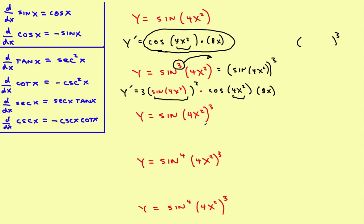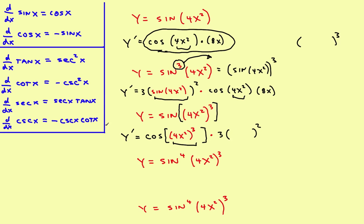Now let's try if the argument is cubed. Y prime: the derivative of the sine is the cosine. Rewrite the original inner part, which is 4x squared cubed. Times the derivative of what's on the inside — but that's also the chain rule. So it's 3 times something squared; rewrite the original inner part, times the derivative of what's on the inside. The derivative of that would be 8x and you are done. So again, you had to use the chain rule twice on that one.